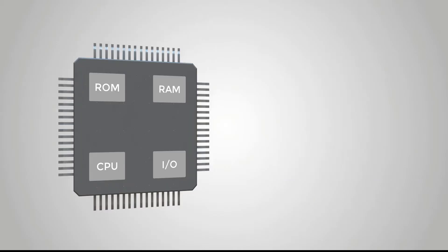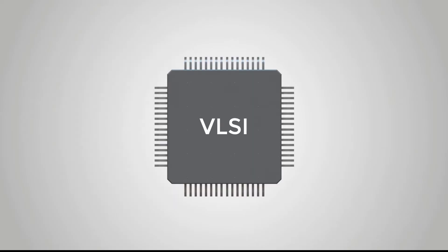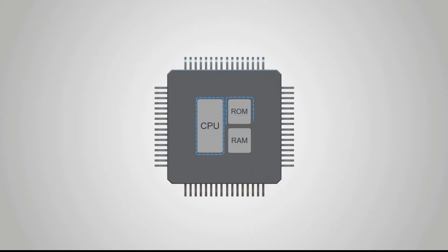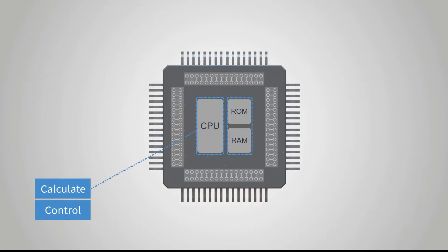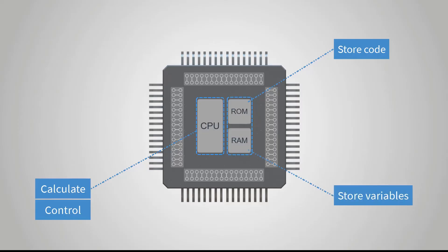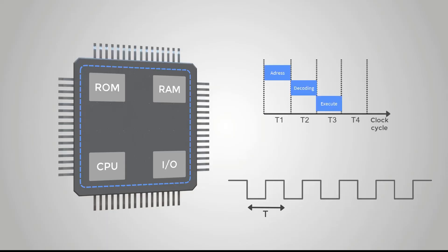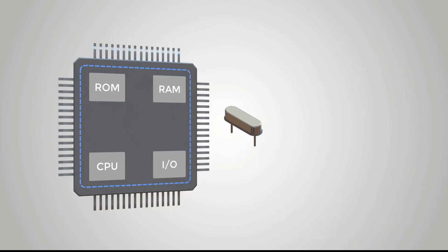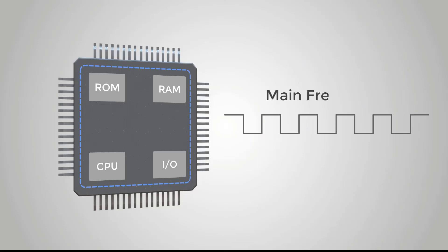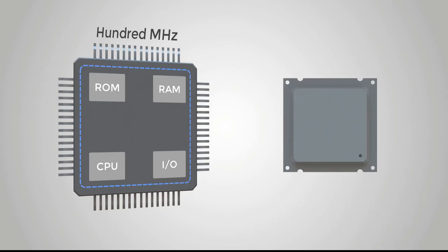In summary, a microcontroller is an integrated circuit chip that uses VLSI technology to integrate the CPU, memory, and various I/O interfaces with data processing capabilities. The main function of the CPU is computing and control. Read-only memory ROM is used to store programs, random access memory RAM is used to store data, and the I/O interface can be used as a data interface, control interface, or human-computer interaction interface. Each module in the microcontroller works synchronously based on a unified beat from the clock. The clock signal is provided by the crystal oscillator, whose frequency is also called the main frequency of the microcontroller. The higher the main frequency, the higher the performance of the microcontroller.